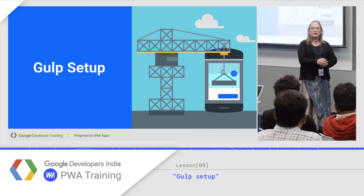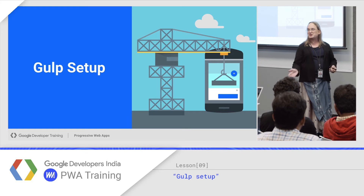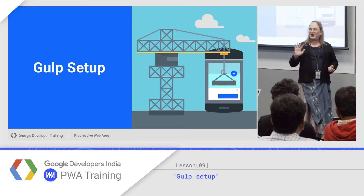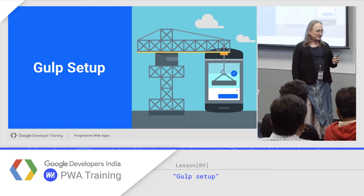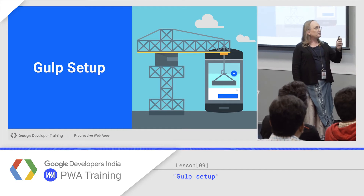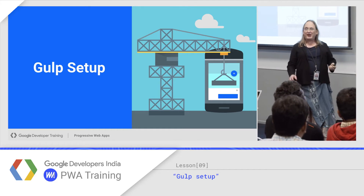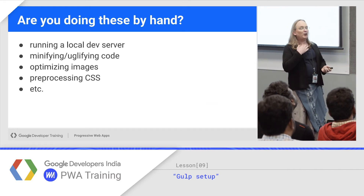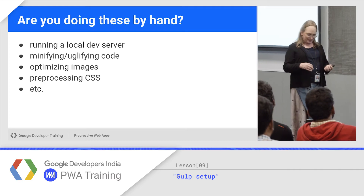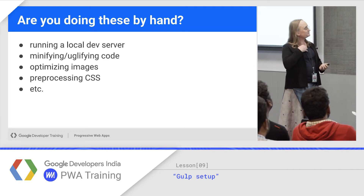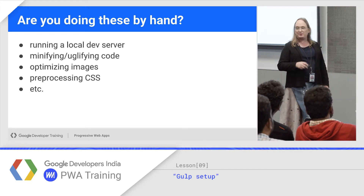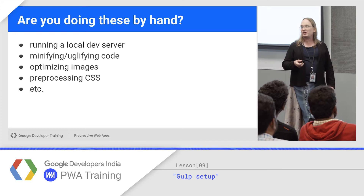There's a bunch of automation tools out there. One of the older ones is called Grunt. Some of you remember old school Make Files from way back in the day. The newer tools are basically Gulp and Webpack. Gulp is really the popular general purpose one. So if you're doing any of these things by hand, you really should be using a task runner like Gulp.